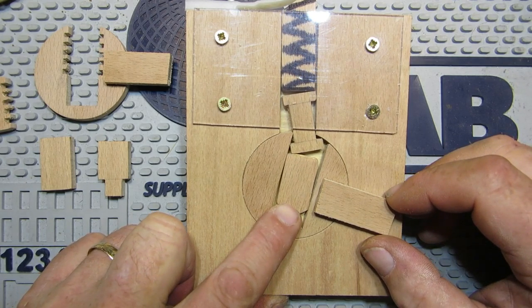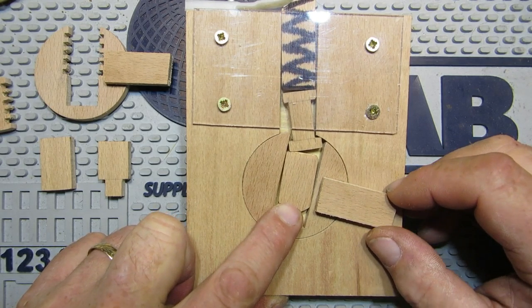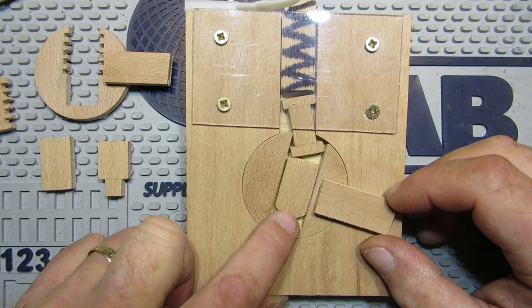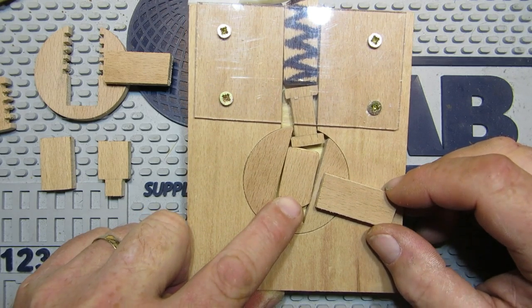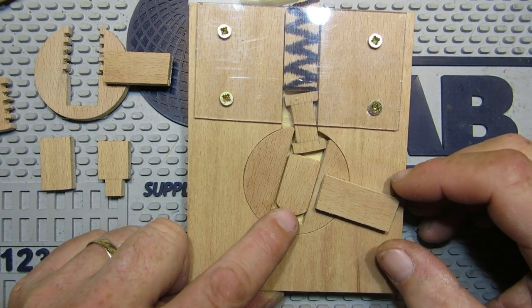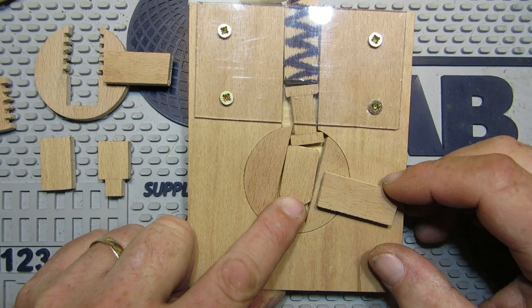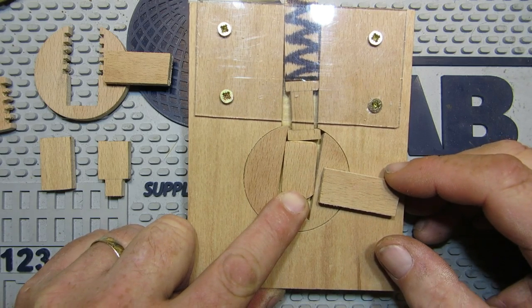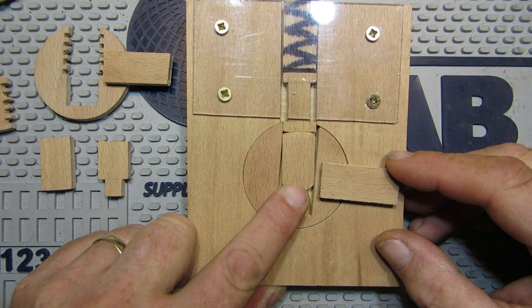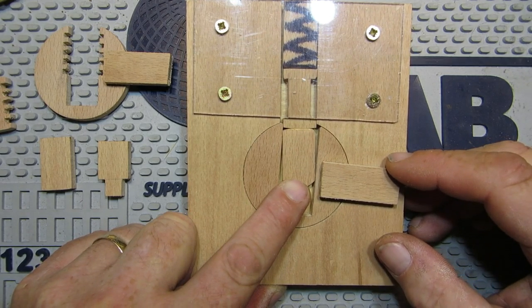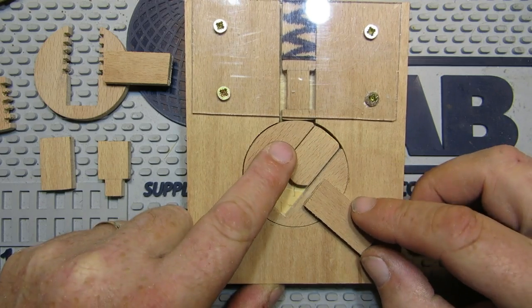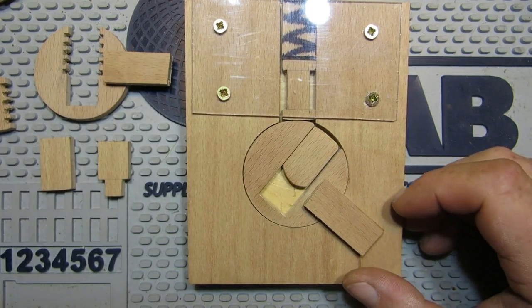And then when you try and pick the pin, this is where when you hear everybody talking about counter rotation, you can see it's a balance between how much tension I'm putting on and how much pressure I'm putting on the pick. And then we get to that point, and then that is a picked pin.